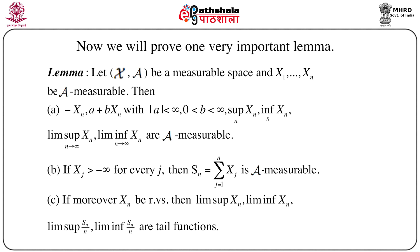Now we will prove one very important lemma which will be used in proving this Kolmogorov 0-1 law. The lemma states: let (script X, script A) be a measurable space, and X1, X2, ..., Xn be script A measurable. Then −Xn, aXn + b (with |a| < ∞ and 0 < b < ∞), sup of Xn, inf of Xn, lim sup of Xn, and lim inf of Xn are all script A measurable.